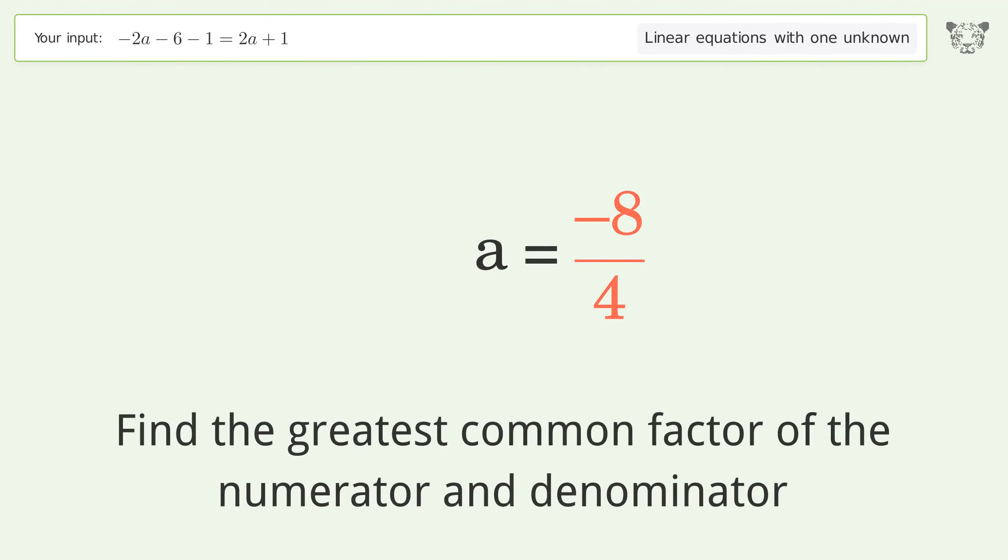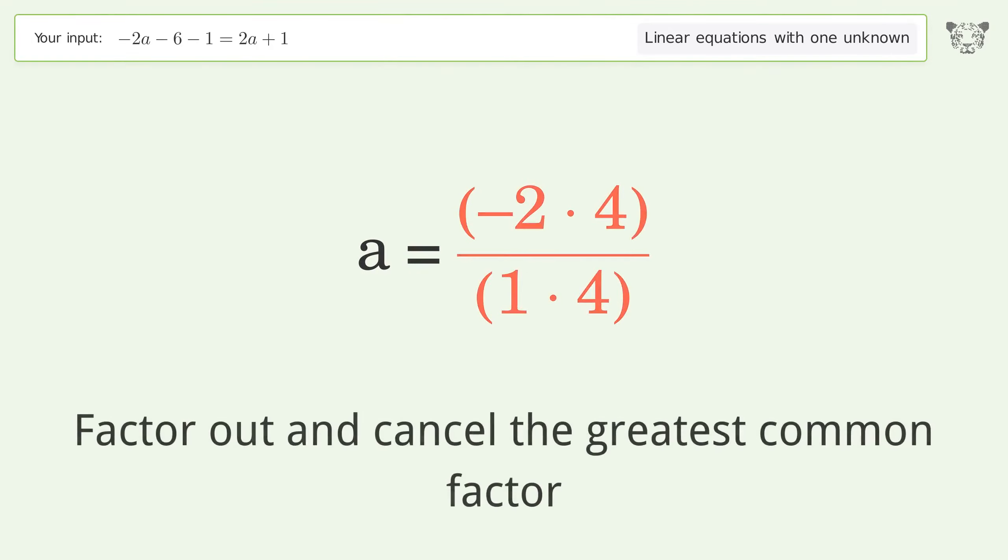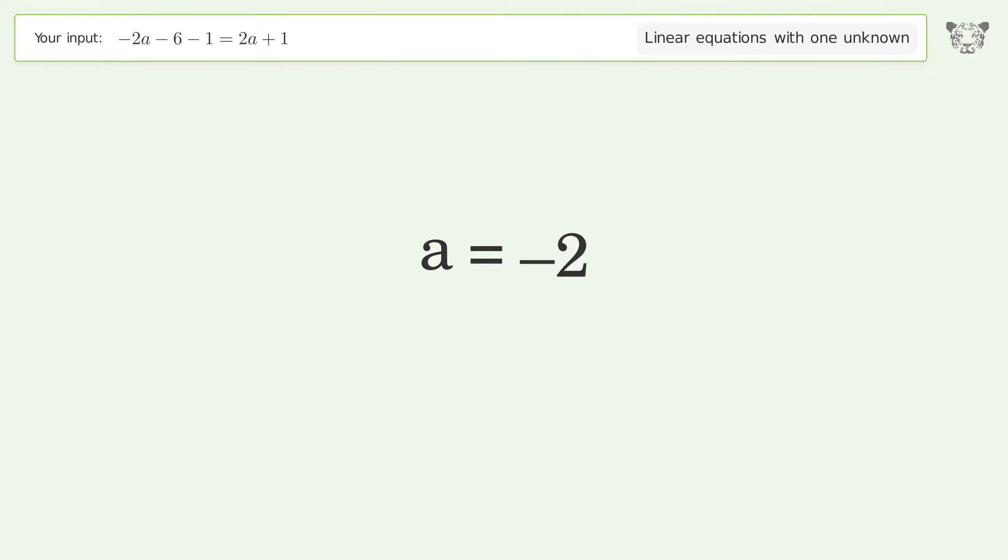Find the greatest common factor of the numerator and denominator. Factor out and cancel the greatest common factor. And so the final result is a equals negative 2. Thank you.